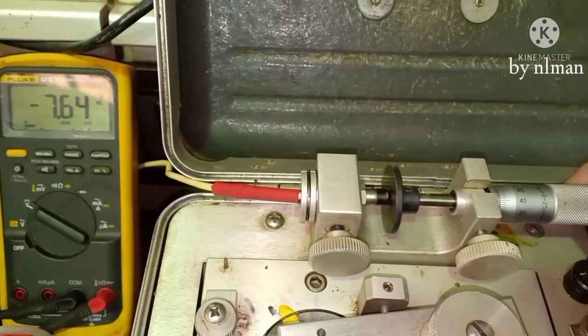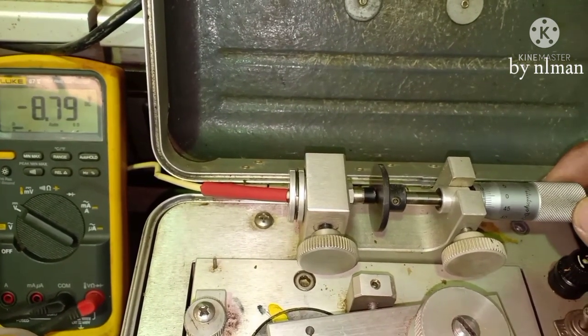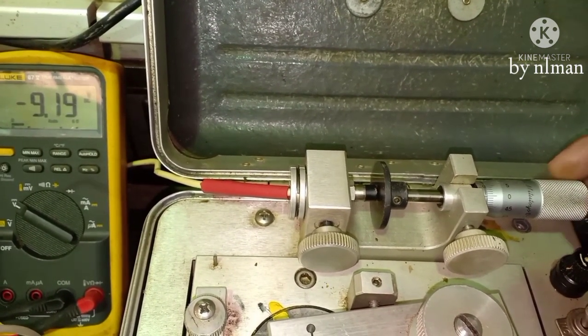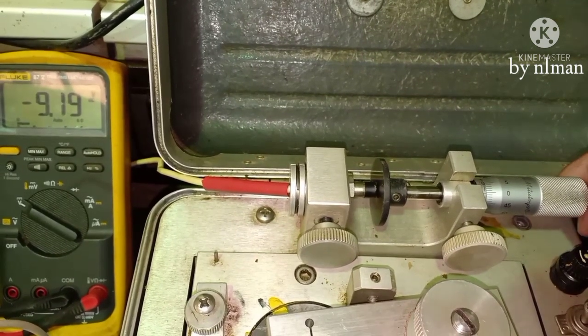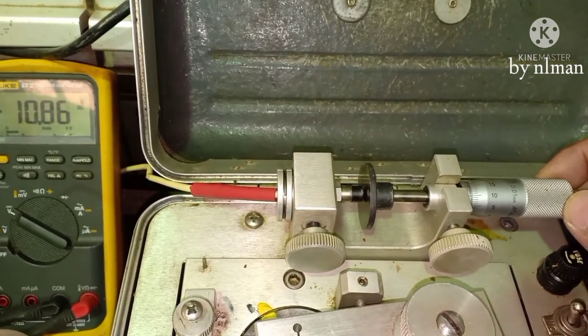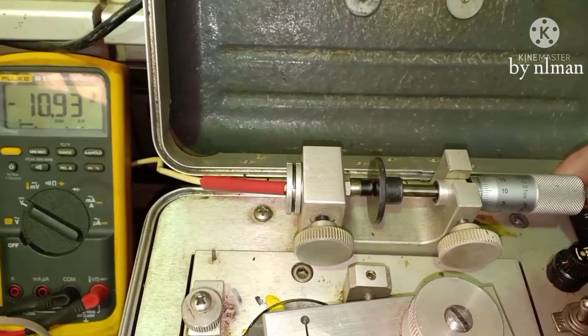400, 7.64. 500, 9.90. 600 microns, 10.92.